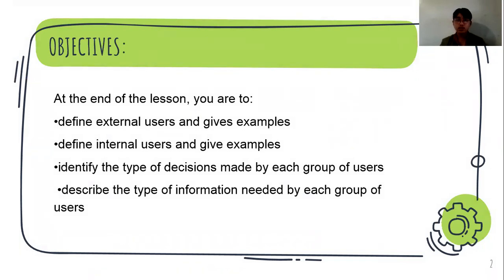At the end of the lesson you are to: first, define the external users and give examples; number two, define internal users and give examples; number three, identify the types of decisions made by each group of users; and last, describe the type of information needed by each group of users.